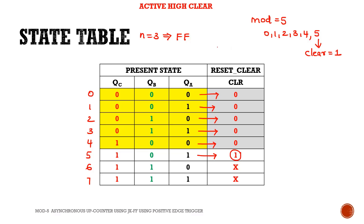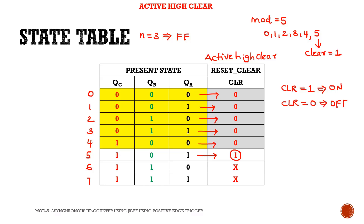This is active high clear — no bar is present on the clear pin. Active high means it switches on when clear=1. When clear=0 it is in the off state. We are switching on clear whenever 101 is detected. We are not concerned about states 6 and 7, so they are taken as don't cares.